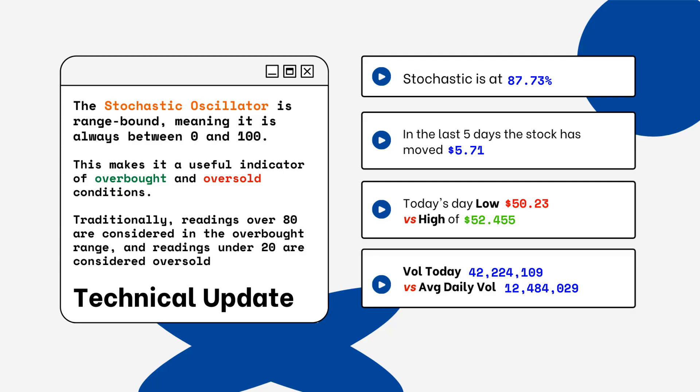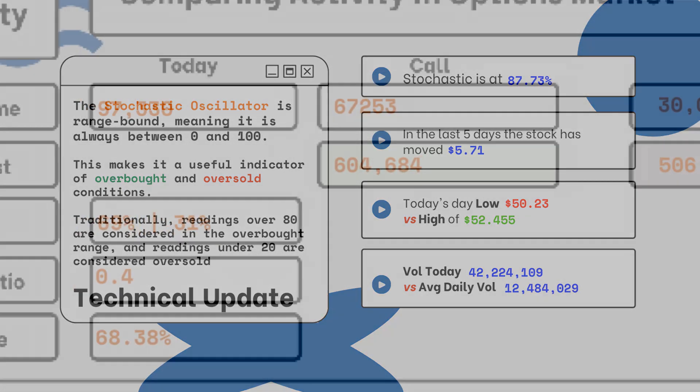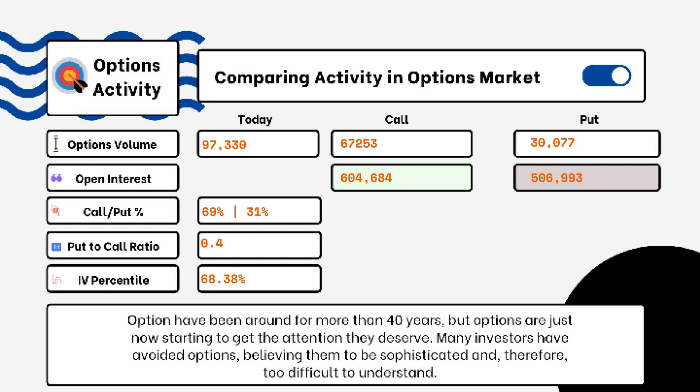We've provided details on today's option activity. What you'll be able to see here is options volume, open interest, implied volatility, put-to-call ratio, and IV percentile.